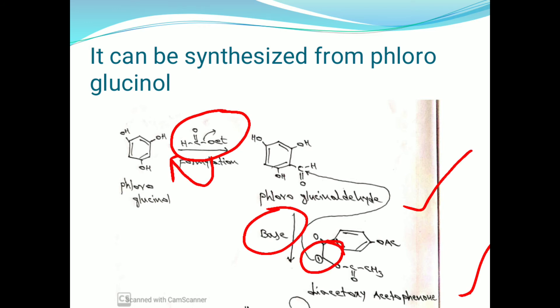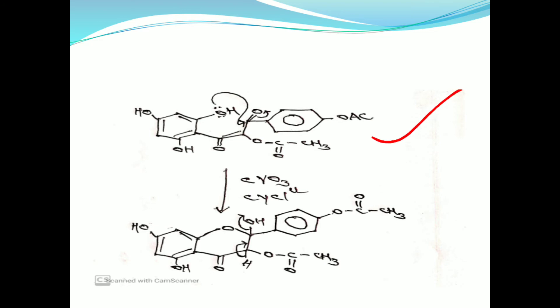So the CH₂ group is converted into a CH⁻ carbanion. This CH⁻ ion attacks the aldehyde carbon, and a new compound is formed. This new compound then undergoes a cyclization reaction.